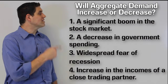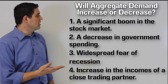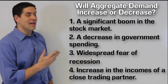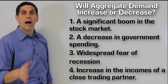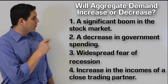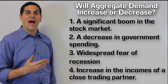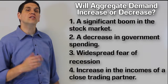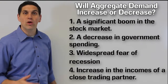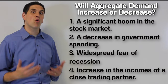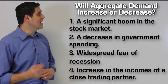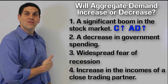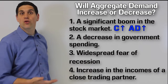I've given you four examples that could shift the aggregate demand. Your job is to figure out will aggregate demand increase or decrease. Stop the video, and for each one, decide if aggregate demand goes up or goes down. An increase in the stock market will increase people's wealth, which means they have more money, so it will increase consumer spending. That will increase or shift aggregate demand to the right.